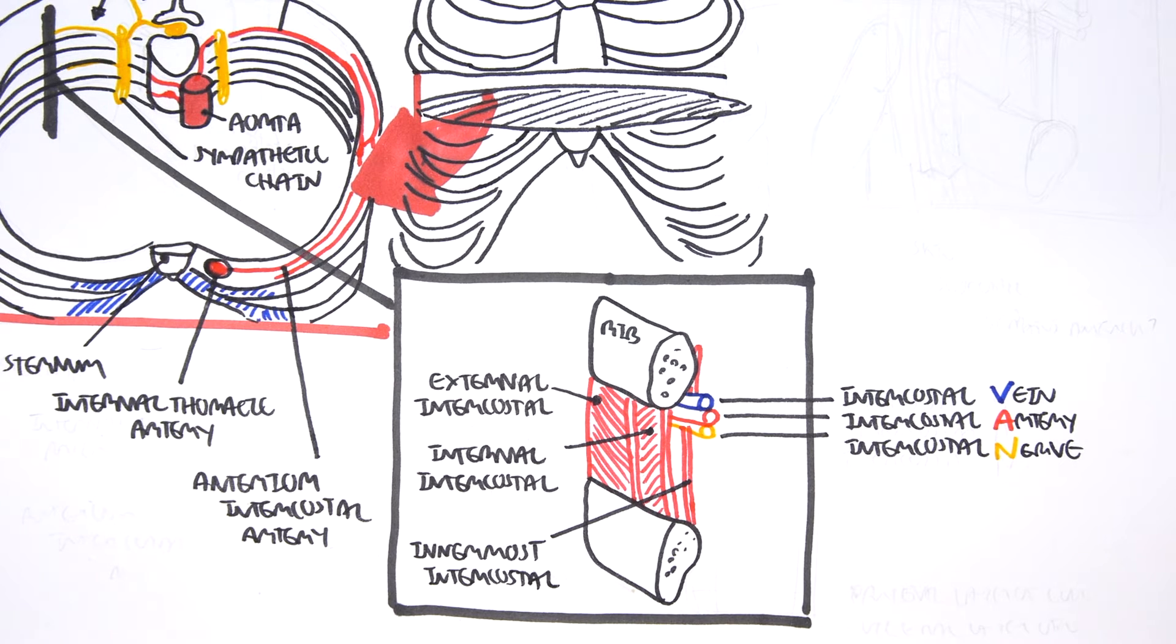So again, we have the intercostal vein below the rib. Then right after the intercostal vein, we have the intercostal artery and then the intercostal nerve. And these three are found between the internal intercostal and the innermost intercostal.